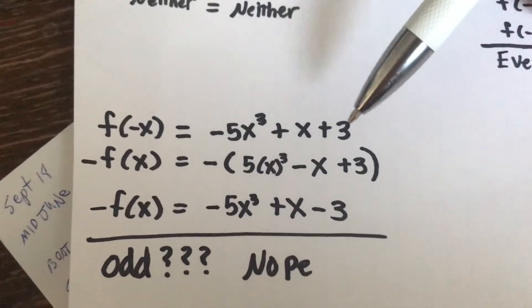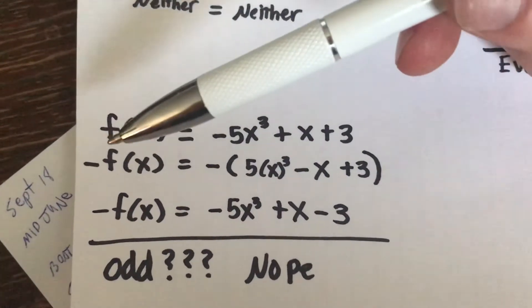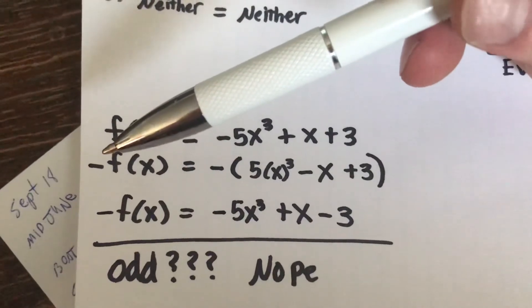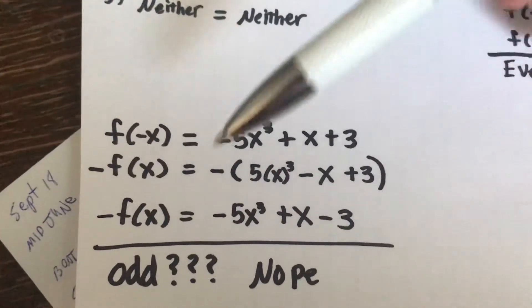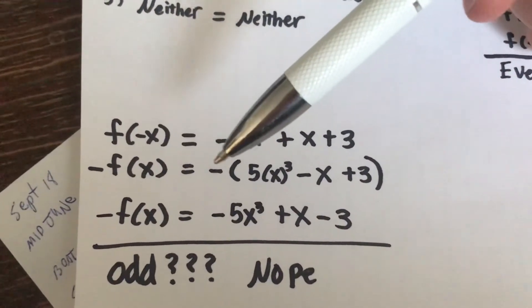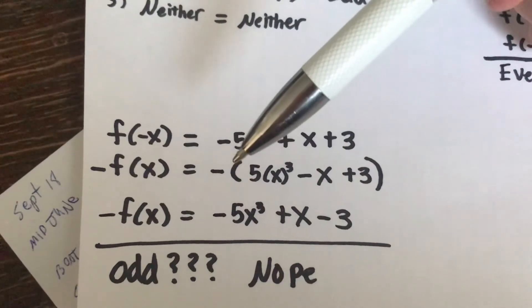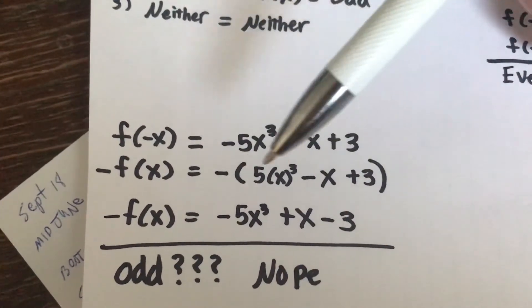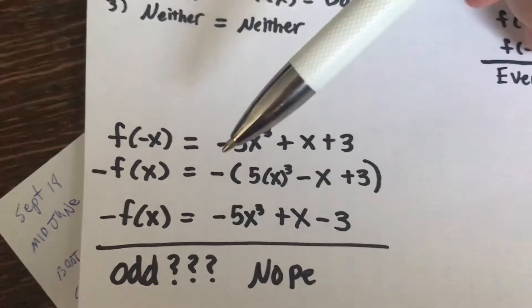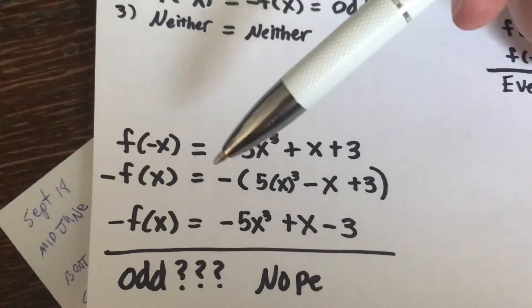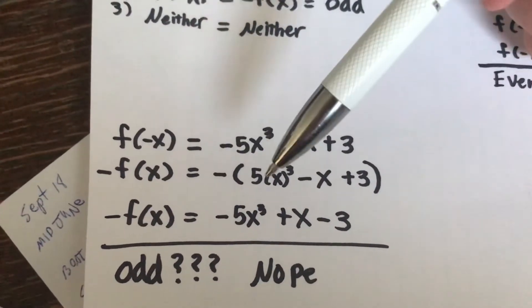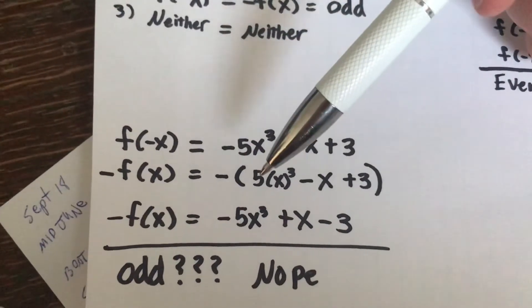We're then going to plug in our equation for negative f of x. To do that, you're going to make the entire function negative, so you put the original function, the original f of x, in parentheses and you'll multiply it by a negative one. And as we distribute into each of these factors, we're going to see if that is equal to f of negative x.